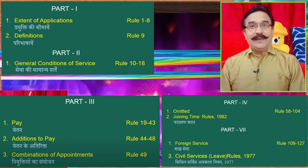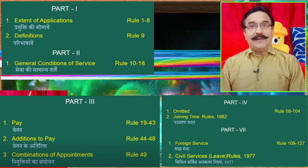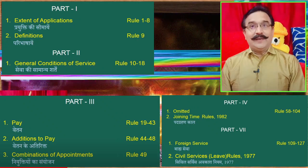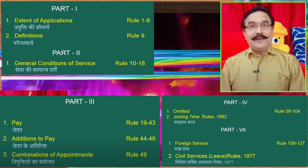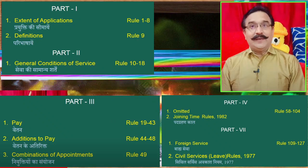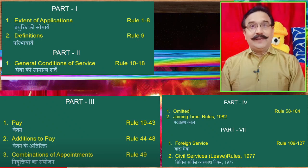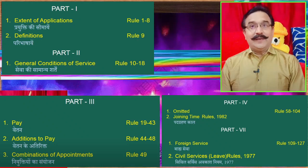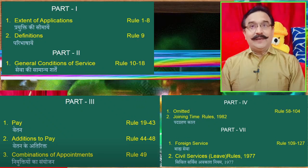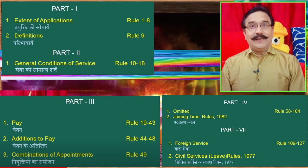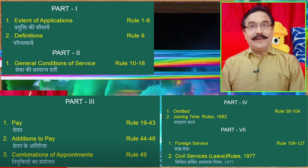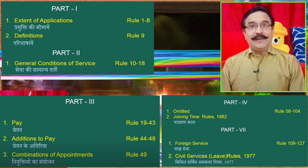Part 3 deals with pay — Rules 19 to 43. Additional additions to pay are covered in Rules 44 to 48, and combination of appointments is in Rule 49. Some parts have been omitted — Rules 58 to 104 have been omitted. So out of the 130 rules that remain, the serial numbers from 58 to 104 are omitted and deleted.